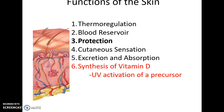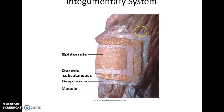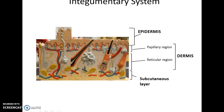The integumentary system includes the epidermis and dermis of the skin. Underlying that is the subcutaneous layer, primarily composed of adipose tissue. Below that is the deep fascia — the connective tissue that helps bind the integumentary system to underlying structures like muscle. The epidermis is the superficial layer; below that is the dermis, which is deep to the epidermis.